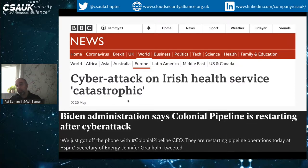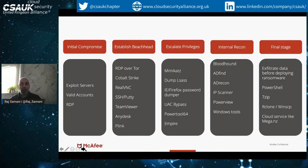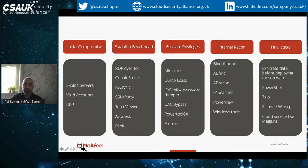The reality is that threat actors are getting better, or at least it looks like it from the headlines — they're able to demand more money and compromise more organizations. If we look specifically at Dark Side, one of the ransomware groups predominantly behind the Colonial Pipeline attack — in the past, protecting an environment just meant installing an antivirus product. But if we look at the way threat actors are actively evolving today, that's not the case. They're leveraging and utilizing tools within the environment that quite frankly are probably being used for legitimate purposes — tools like RealVNC, RDP, AnyDesk, and TeamViewer.